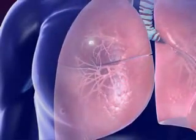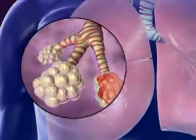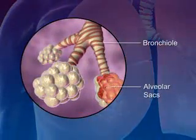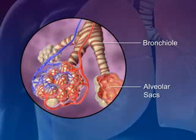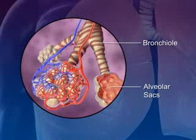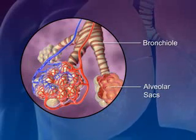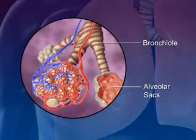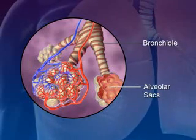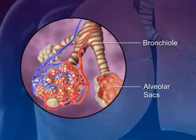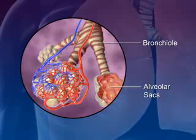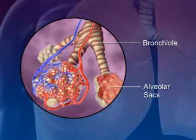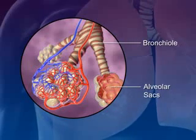The bronchi carrying the air subdivide into smaller branches called bronchioles. At the end of each bronchiole are the alveolar sacs. The alveolar sacs are surrounded by blood capillaries and contain millions of single-layer alveoli cells where the gas exchange takes place.